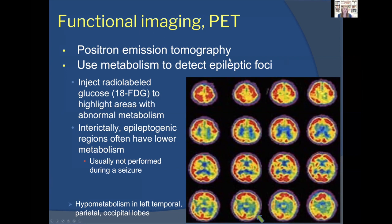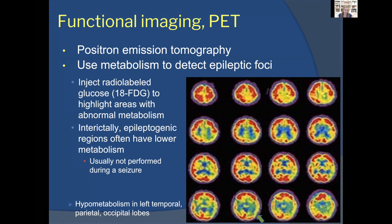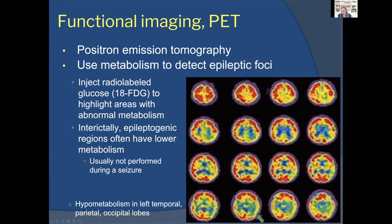Functional imaging can help especially when the pattern isn't a stereotypical mesial temporal presentation — for instance in lateral or posterior temporal epilepsy. A PET scan uses metabolism to detect the epileptic focus: you inject radiolabeled glucose and watch which areas of the brain have lower metabolism interictally. A region with yellowish color instead of bright red on the scan indicates lower metabolism, suggesting — not definitively proving — that seizures may originate from that area because that part of the brain is abnormal.